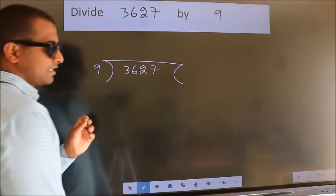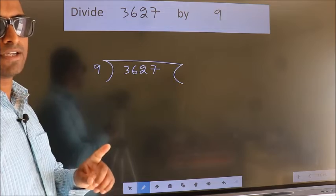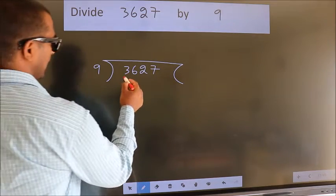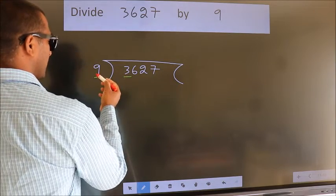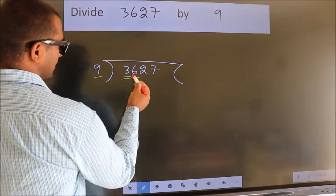This is your step 1. Next, here we have 3. Here 9. 3 is smaller than 9. So we should take 2 numbers, 36.